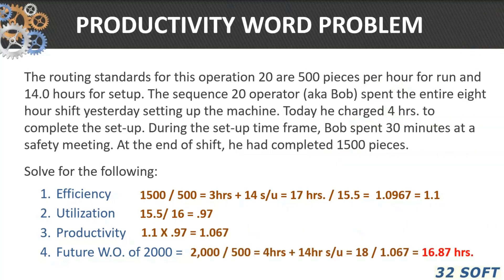If we multiply the efficiency and utilization together, we get the productivity factor. We can then multiply that productivity factor by 2,000 pieces, which tells us it will take approximately 16.87 hours to produce the next 2,000 pieces in this department. That's how we calculate productivity.